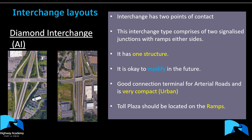The diamond interchange is similar to the SPUI but has two signals, one on either side, creating two points of contact with signalized junctions and ramps. It can be designed wider, giving ramps a higher level of service with more area for right-turners between the two signals, or tighter with signals placed close together. It's very good for urban use, with toll plazas on the edges. In South Africa, some have been converted to roundabouts due to signal downtime.